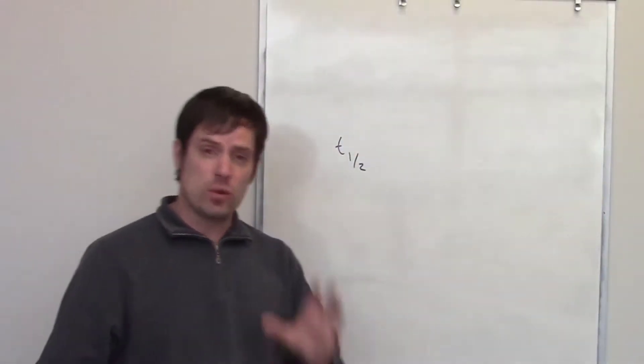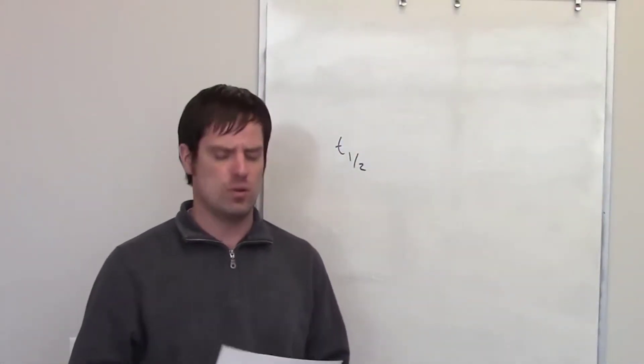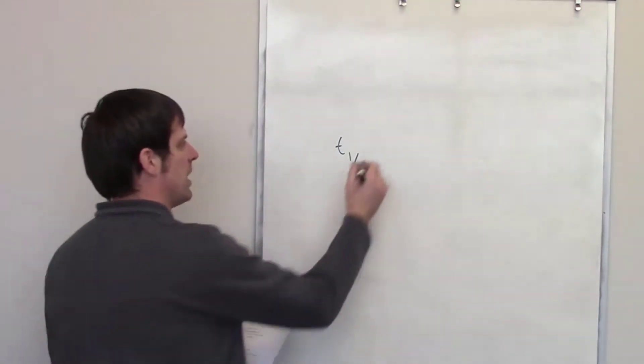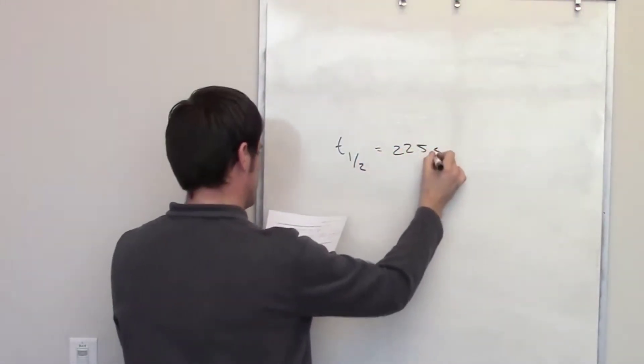This question asks us to determine the rate constant of a first-order rate decay process that has a half-life, or t1 half, of 225 seconds.